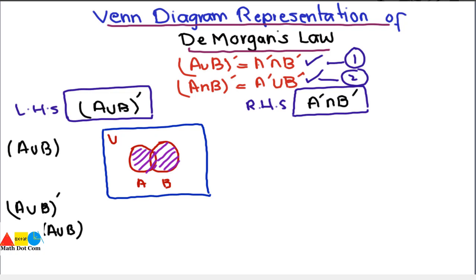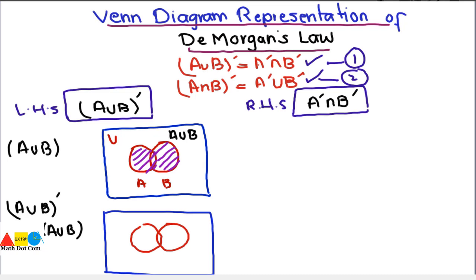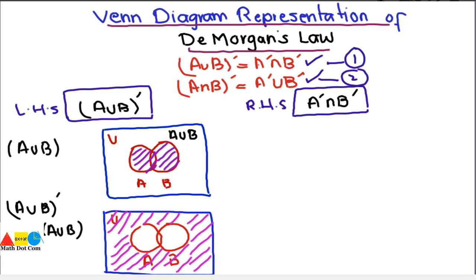Now for U minus A union B, that is A union B whole complement: we draw the universal set with sets A and B. To find A union B whole complement, we subtract A union B from the universal set — subtracting A and B altogether. So the portion other than A and B, the shaded region outside both sets, is the complement of A union B.